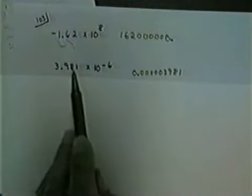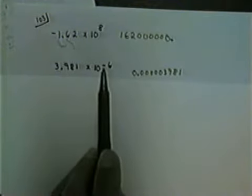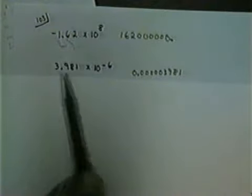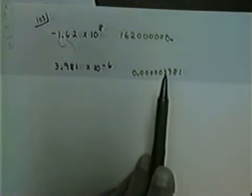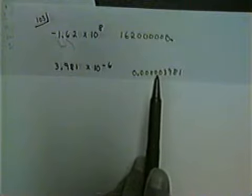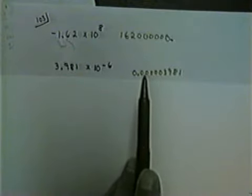So notice we had 3.981 times 10 to the negative 6. I need to move my decimal six places to the left — one, two, three, four, five, six places to the left. I have converted from scientific notation to decimal notation.